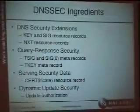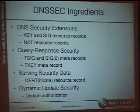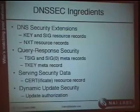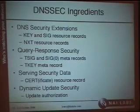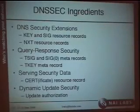DNSSEC is comprised of four ingredients. First is the DNS security extensions — the key and SIG records, the NXT records — generally involved with securing name servers and communication. Next is query response security, which involves securing queries from resolvers to name servers, zone transfers, and dynamic update. That uses three different meta resource records. Third is serving security data. Fourth and finally, dynamic update security is being added to allow dynamic updates to be trusted, authorized, and verified.